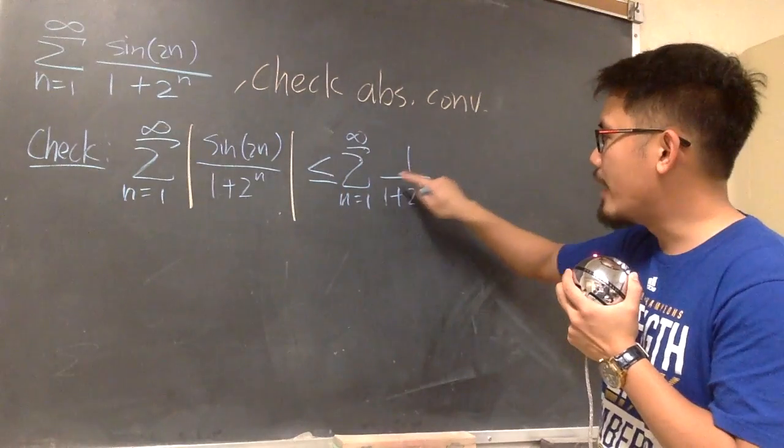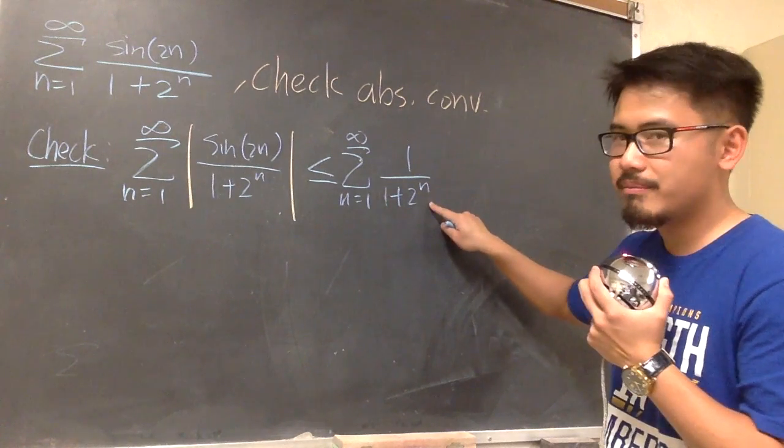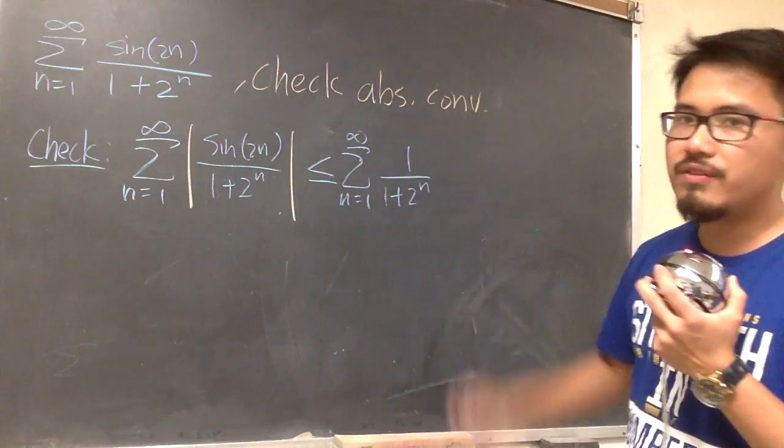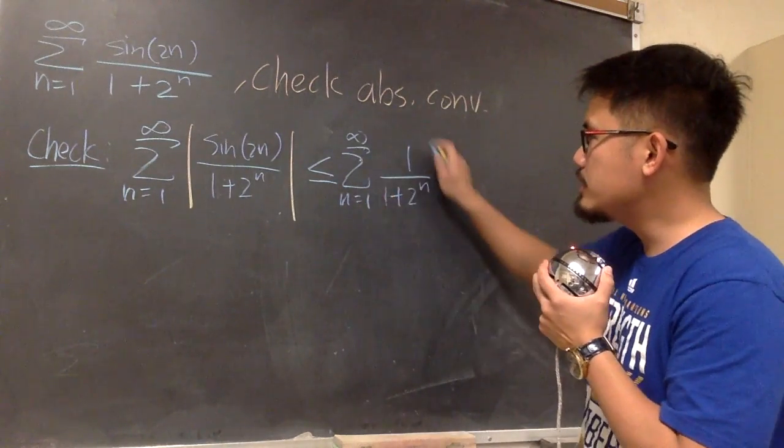And you see, here, 1 over 1 plus 2 to the n, this is always positive now. I don't need the absolute value anymore. And now we just have to work with this.